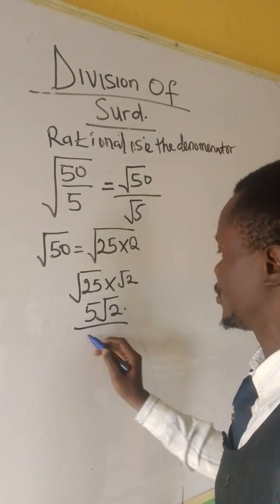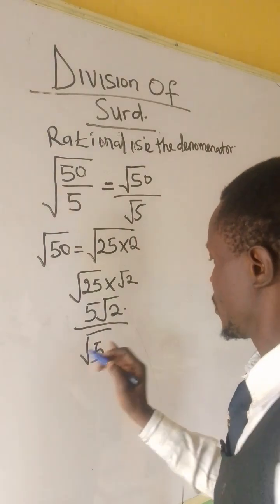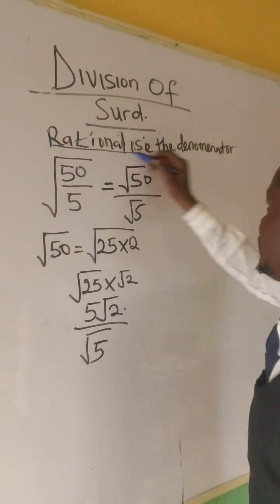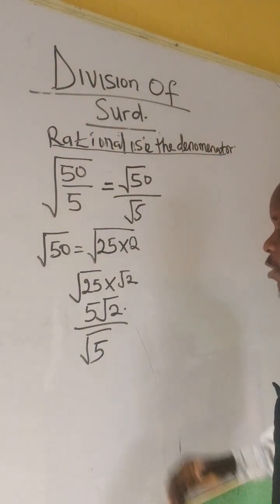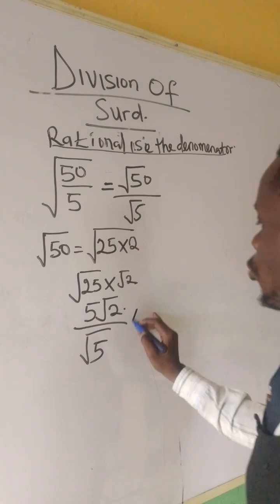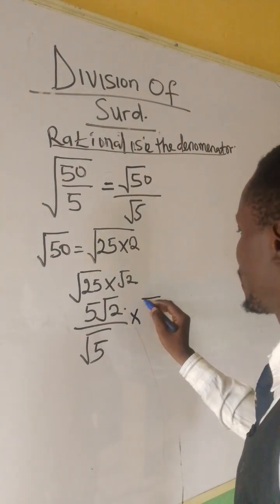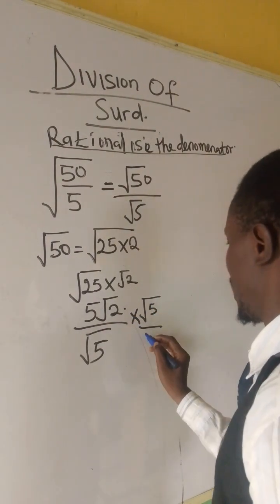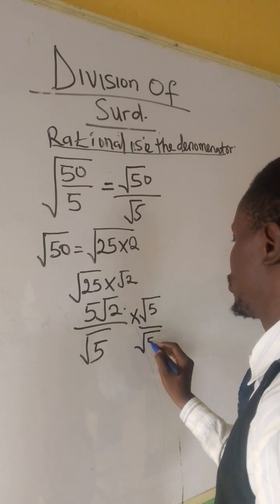Now, we can bring down our denominator. Now, we want to apply this now. Now, what that means is we are multiplying the numerator by root 5 and also the denominator by root 5.